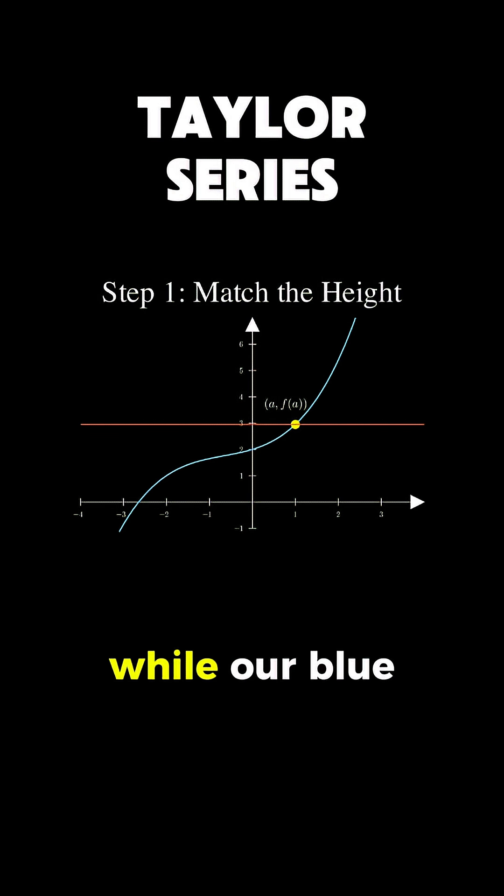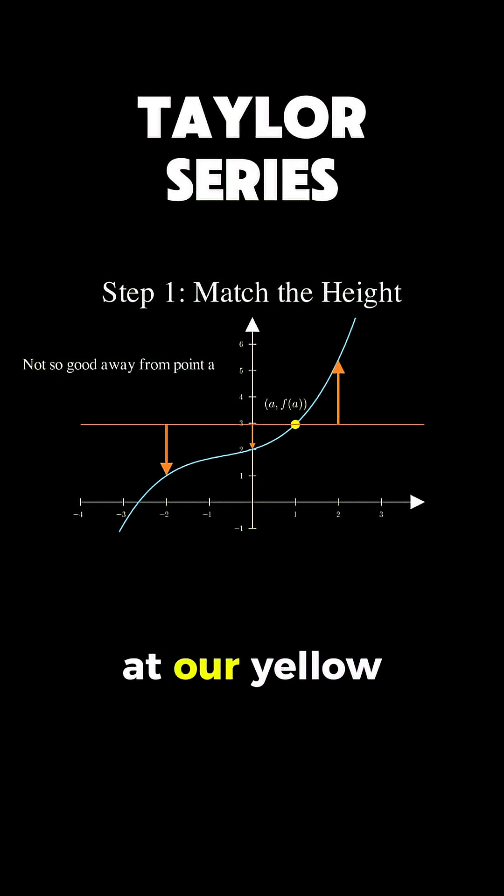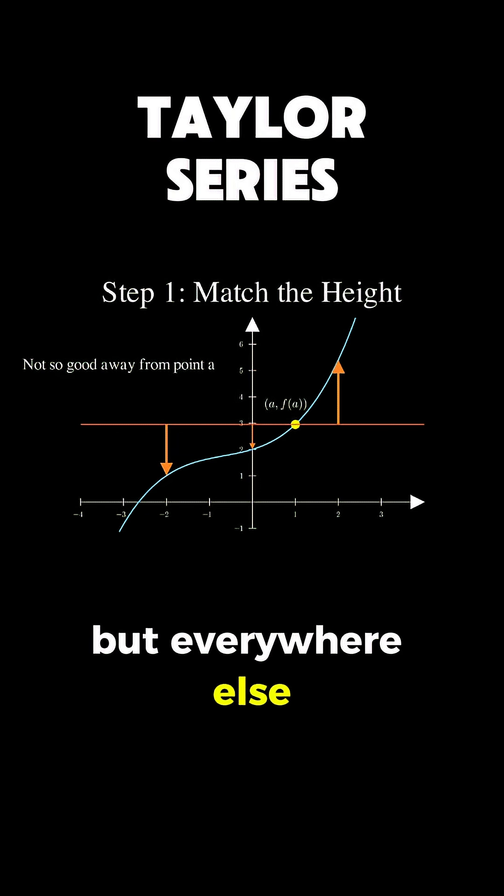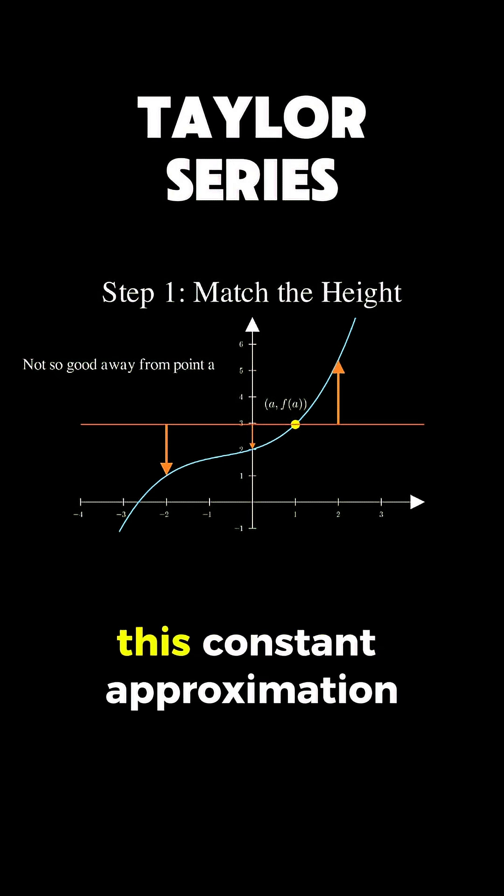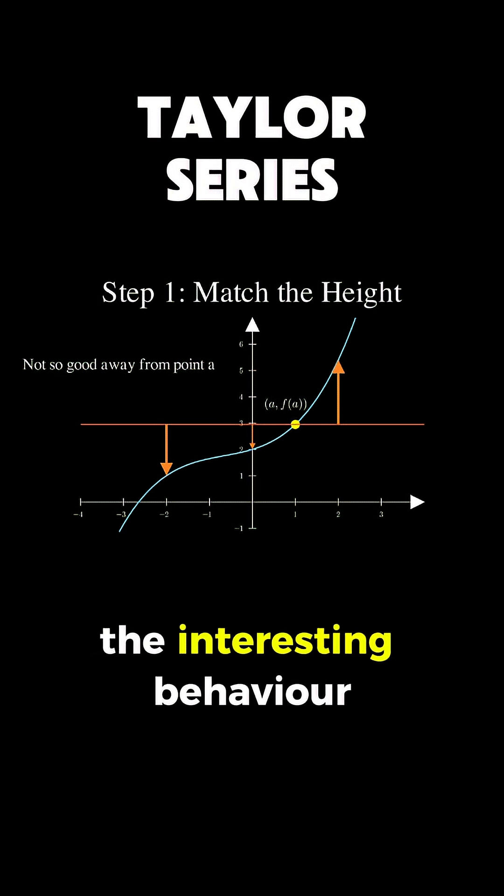But look at this, while our blue function curves and changes, our red approximation is just flat. We're matching perfectly at our yellow point, but everywhere else, we're way off. This constant approximation is like trying to describe a roller coaster by only knowing its height at one spot. You're missing all the interesting behavior.